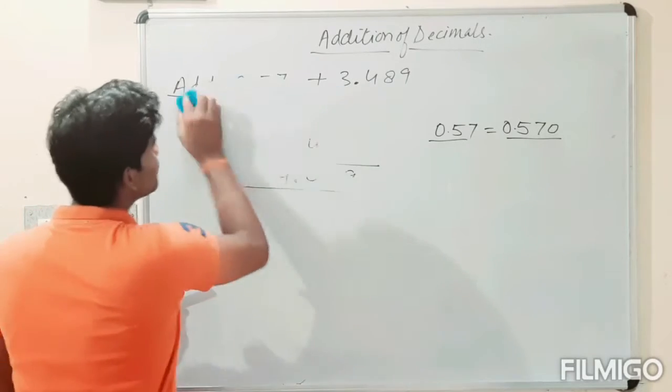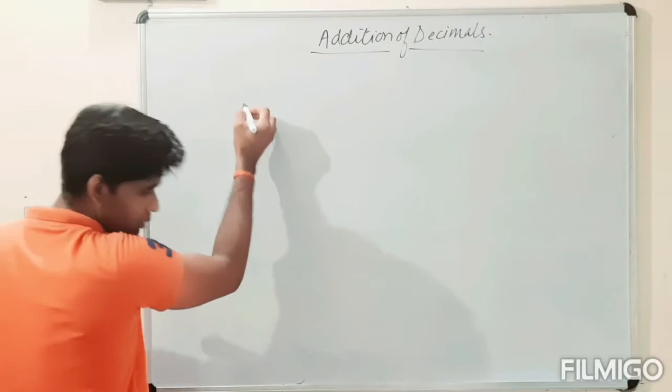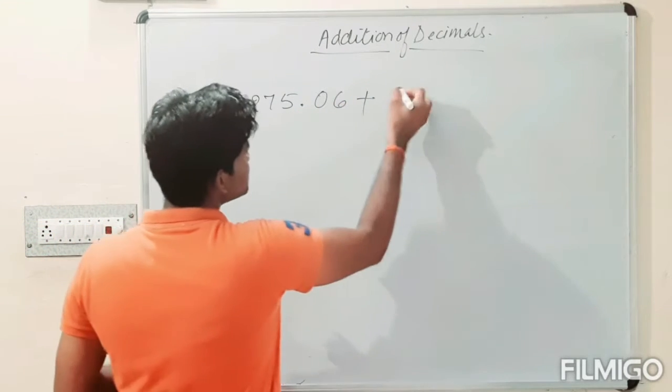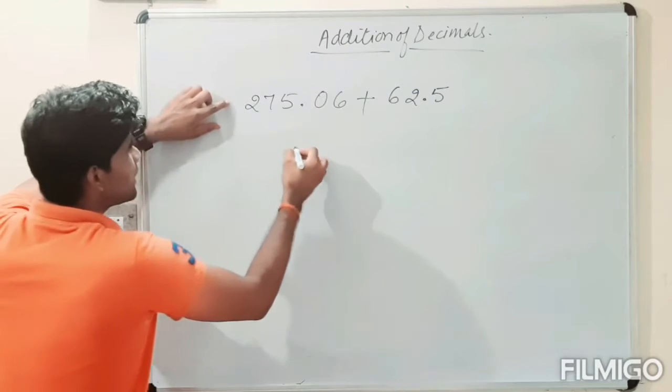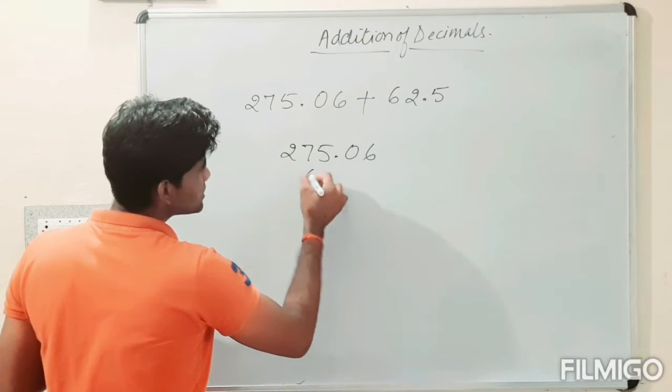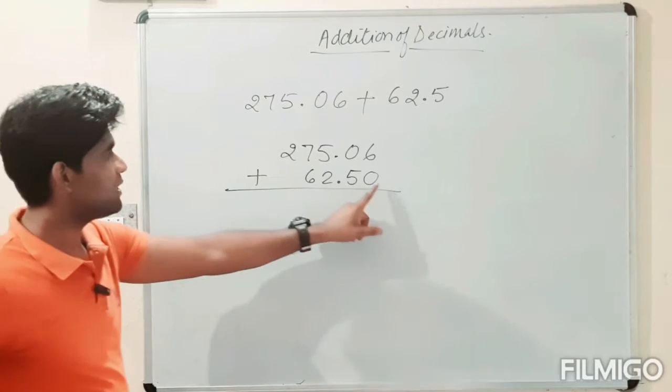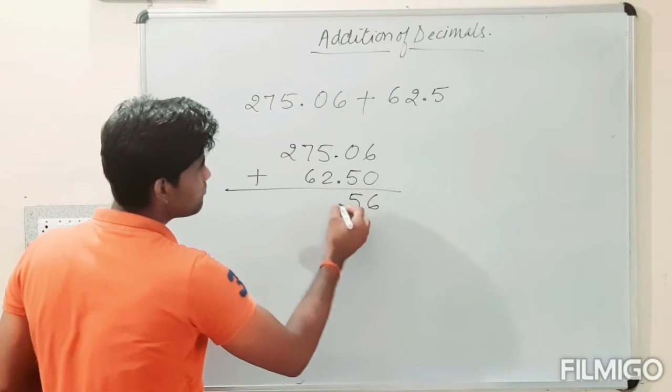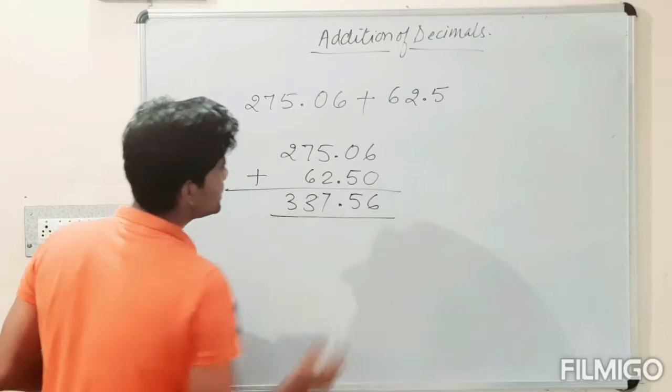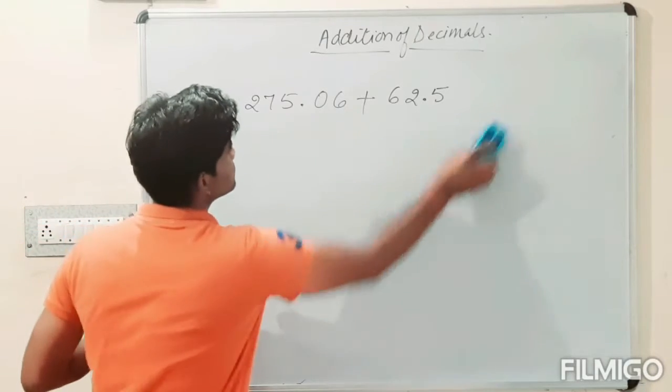Take one more. Now, take an example. Look, we have 275.06 and we need to add it with 62.5. So take 275.06. Then we need to add 62.5. So 337.56 is the required decimal number which we will get after adding these two numbers.